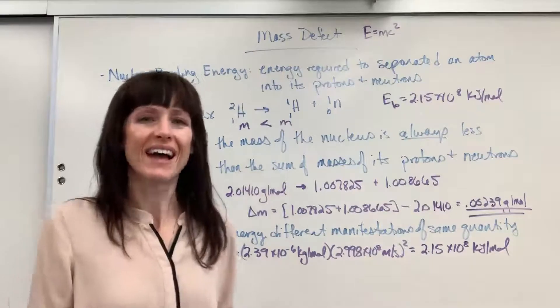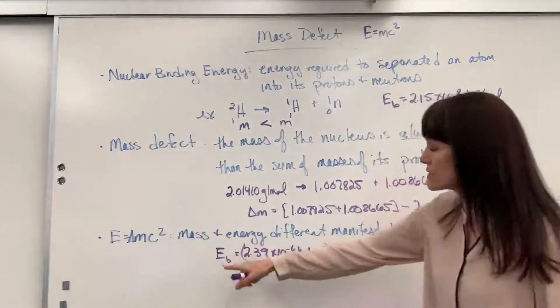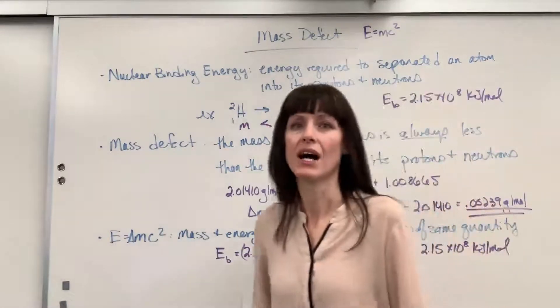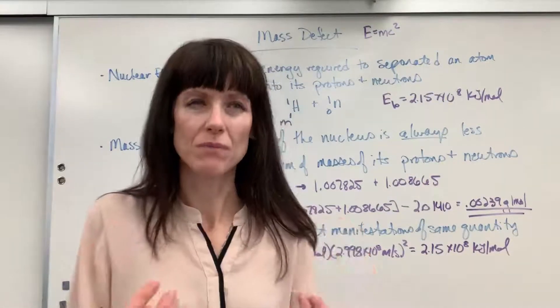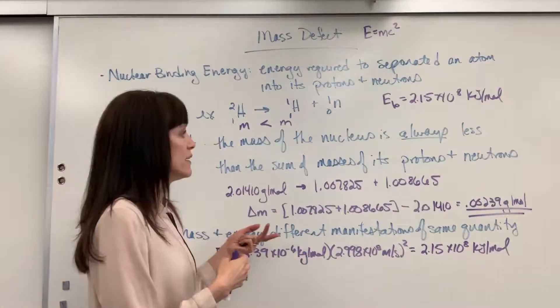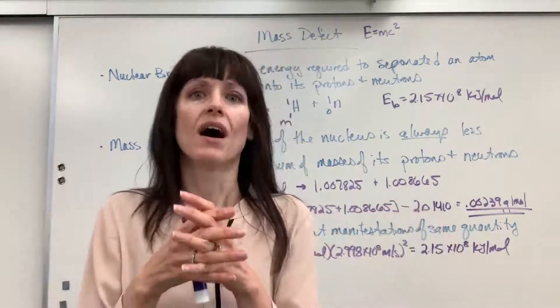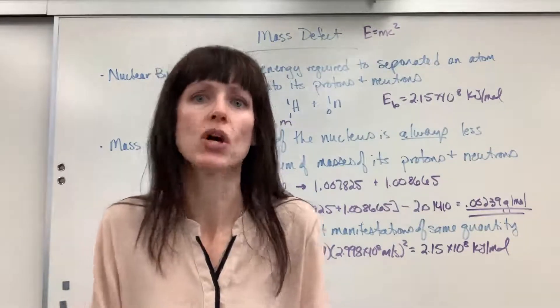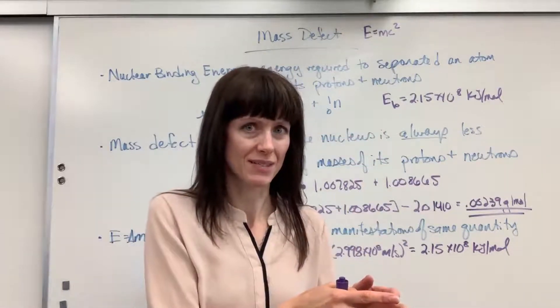So this is what Einstein discovered. He came up with E equals MC squared. And really what this tells us is that mass and energy are different manifestations of the same quantity. So if you will, I'm going to take a little bit of liberty to help you make this make sense. It's really at the nuclear level that there is a conservation between the combination of mass and energy. It's mass and energy that will always be conserved.